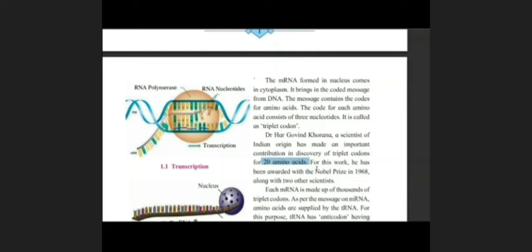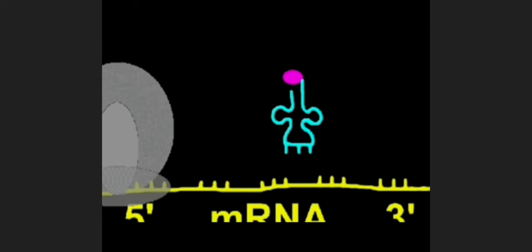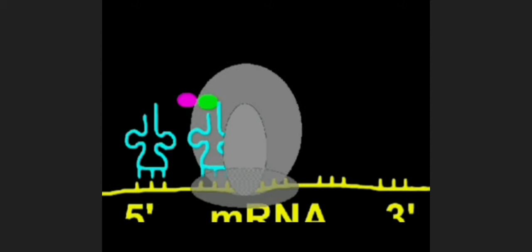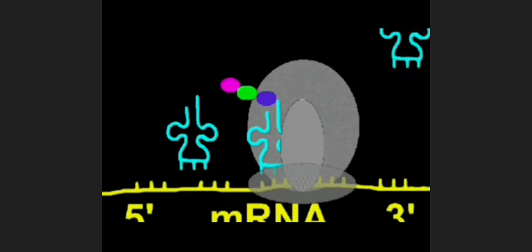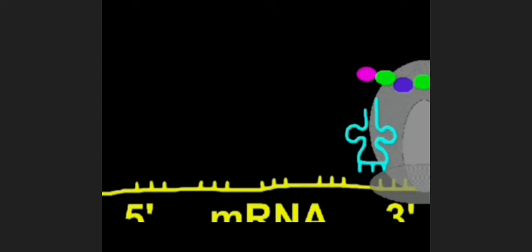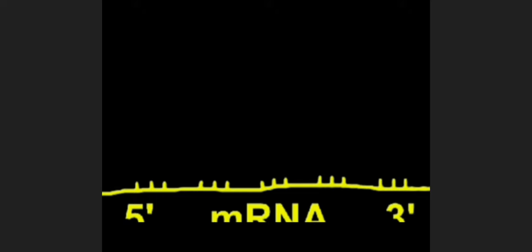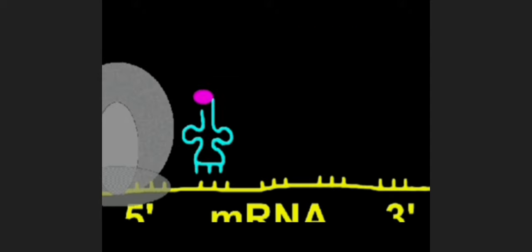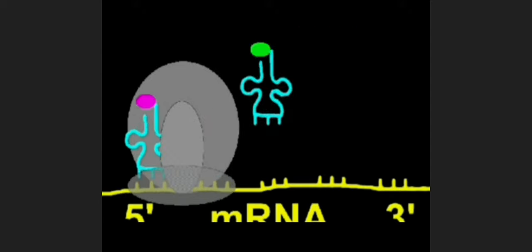So here, mRNA carries the message. After that, second step starts, that is called translation. Translation, you know the meaning of translation. You translate the paragraph in English paper or in language paper. You have to translate that paragraph into your mother tongue. That means, whatever sequence present on this mRNA, as per that, there is a pairing, attachment from the tRNA occurs.